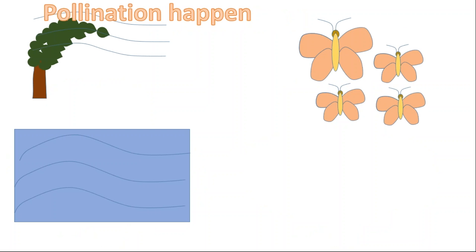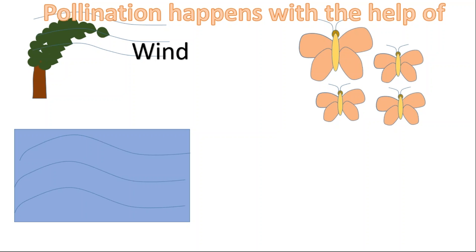Pollination happens with the help of wind, water, and insects.